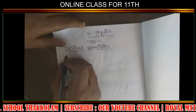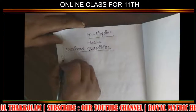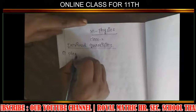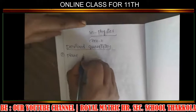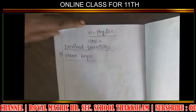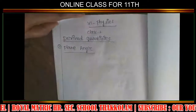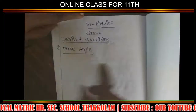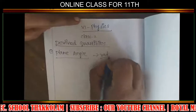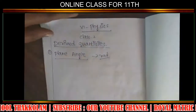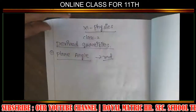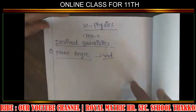First, what are derived quantities? Plane Angle — the SI unit is Radian. The angle is Radian. Solid Angle is Steradian.